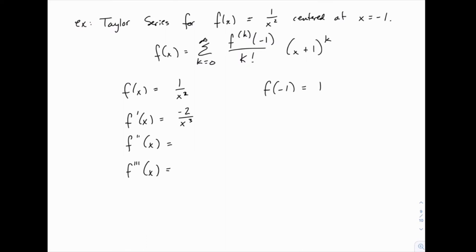When we plug in -1 to that first derivative, we get positive 2 because the denominator will be -1, and so that'll cancel with the negative in the numerator.